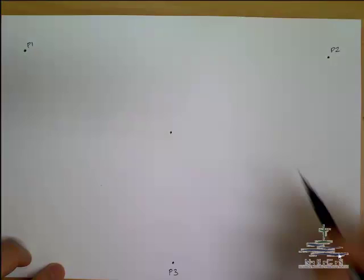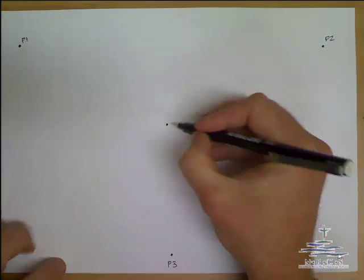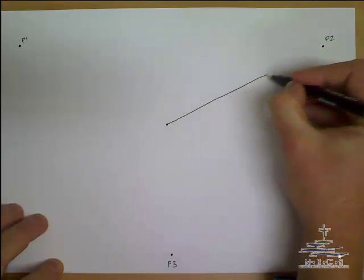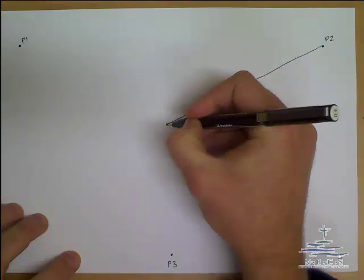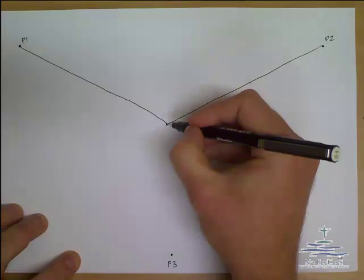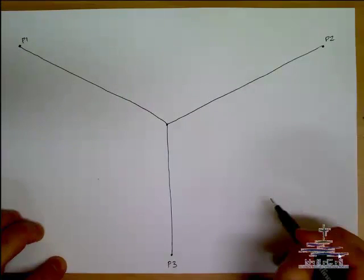So remembering that all our lines go to one of these three points that we can see. Step one is we draw a Y shape. So from the center we draw a line out to all our perspective points like so. That's step one, we call the Y.